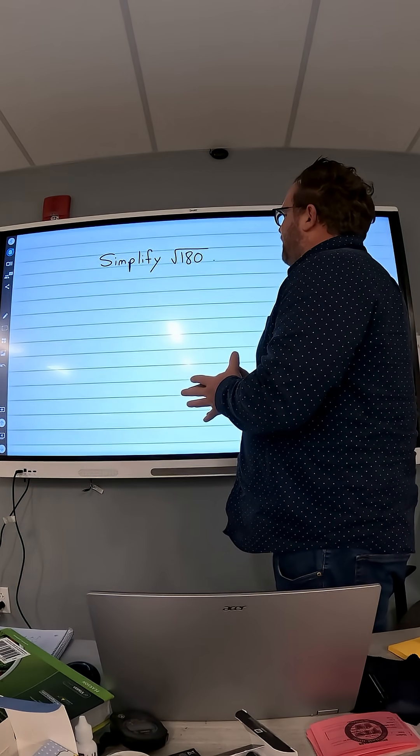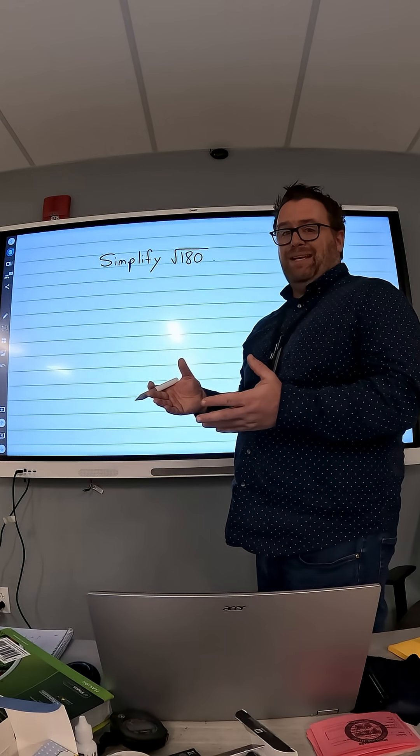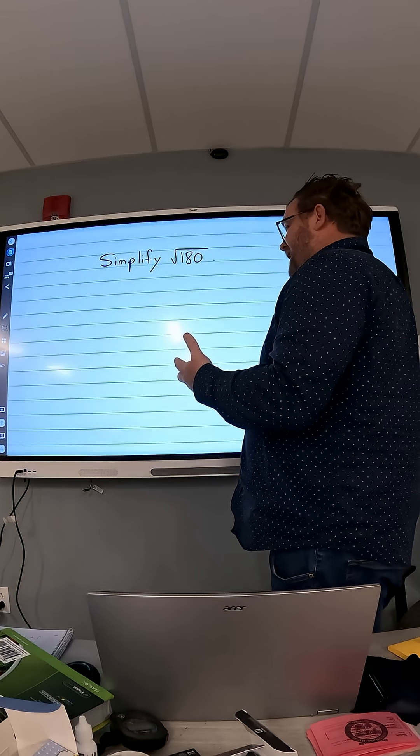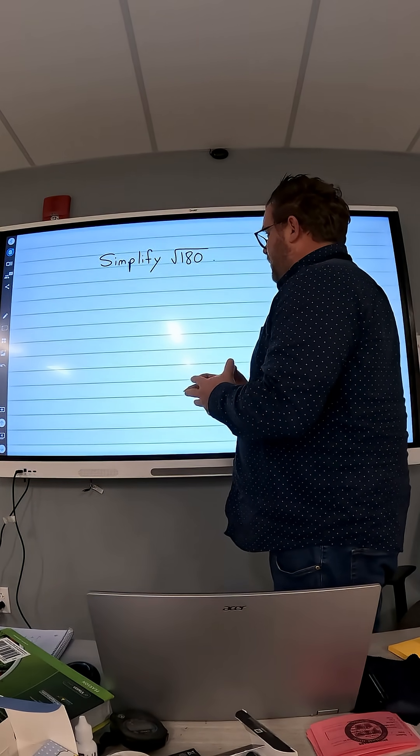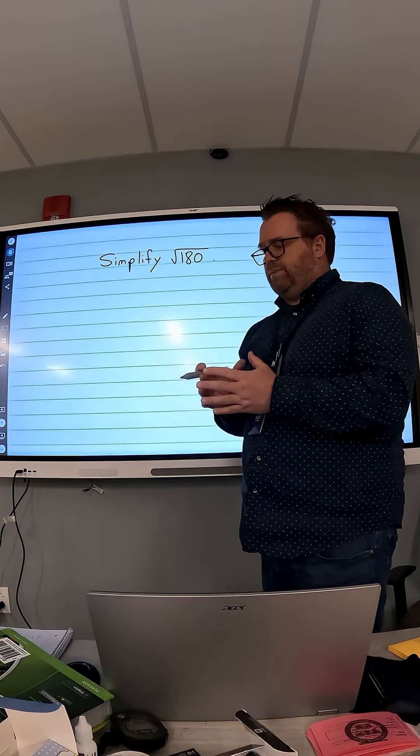All right, in this video we're going to simplify the square root of 180. So we can't factor out a negative 1. I did that in a previous video. But what we can do is we can break 180 down into its prime factors.